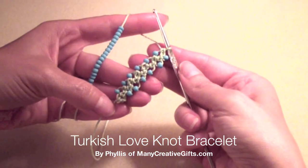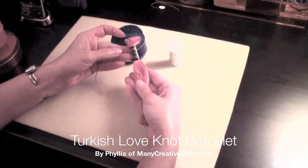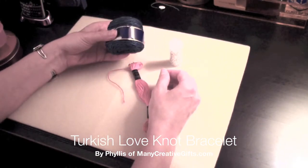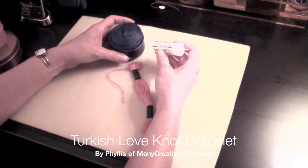To make the Turkish Love Knot Bracelet, you need some embroidery thread or lace weight yarn and some size 6 seed beads.